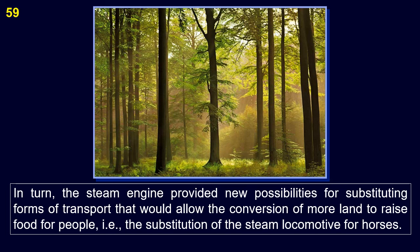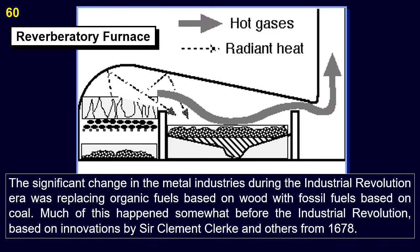The steam engine provided new possibilities for substituting forms of transport that would allow the conversion of more land to raise food for people — that is, the substitution of the steam locomotive for horses. The significant change in the metal industries during the Industrial Revolution era was replacing organic fuels based on wood with fossil fuels based on coal. Much of this happened somewhat before the Industrial Revolution, based on innovations by Sir Clement Clarke and others from 1678.